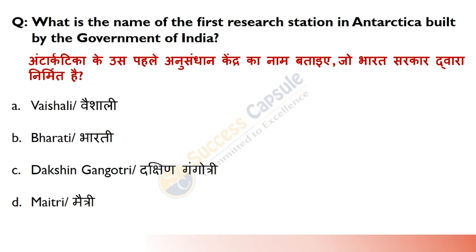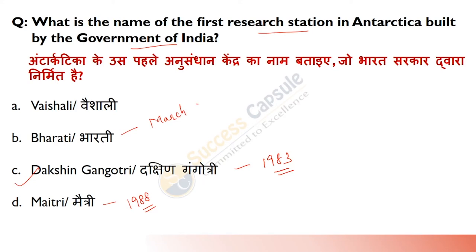What is the name of the first research station in Antarctica built by the Government of India? The first station, Dakshin Gangotri, was established in 1983 but later got covered in snow. The next station, Maitri, was established on 8th May 1988. Now the newest one is Bharti, established in March 2012. Currently, Maitri and Bharti are both active Indian research stations in Antarctica.